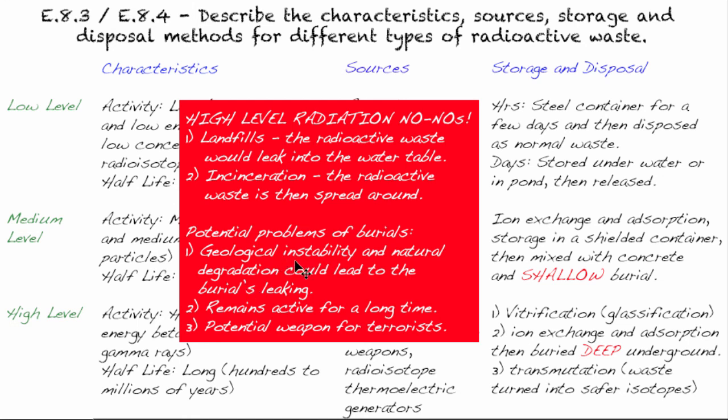Once something happens like an earthquake or it breaks down, then there could be some leaking. And number two, this stuff, if we just bury it and we don't try and go through a transmutation process, then we're essentially ensuring that it's going to be there for a long time. And then the third potential problem is that this can be a potential weapon for terrorists. This is radioactive material that can harm people. So that basically covers what you need to know about radioactive waste.